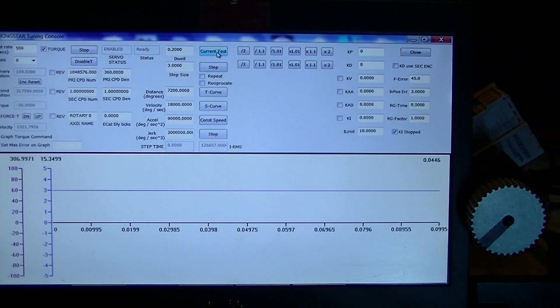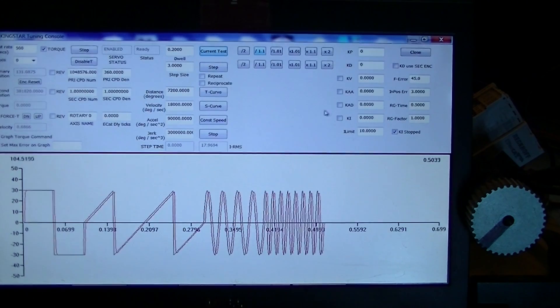The first thing you're going to do is go in here and do a current test. When we hit this current test, you can see that the motor moves. What you're looking at here is simply some commanded torque, 50% forward, minus 50% reverse.